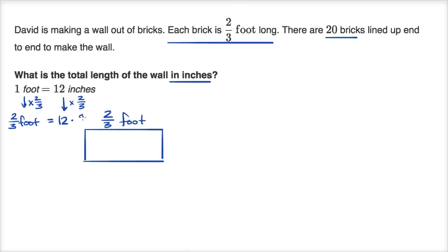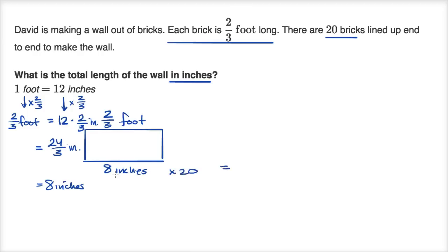So two thirds of a foot is two thirds times 12 inches. That gives us 24 over three, which is equal to eight inches. So each brick is either two thirds of a foot long or eight inches long. There are 20 bricks lined up end to end, so the total length is eight inches times 20. Eight times 20 is 160 inches.